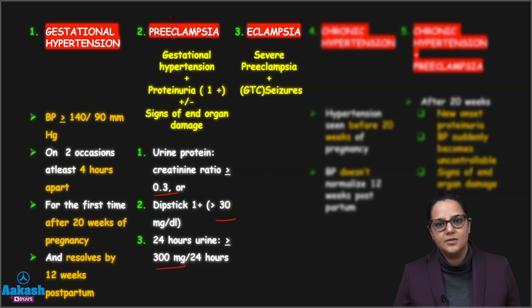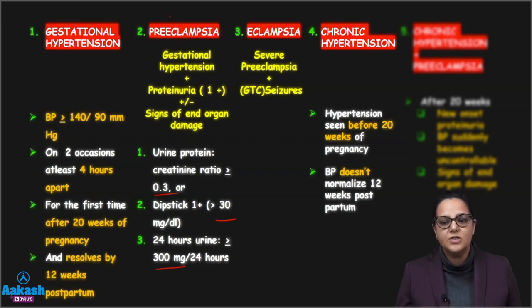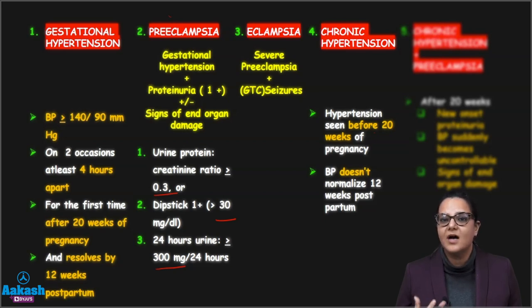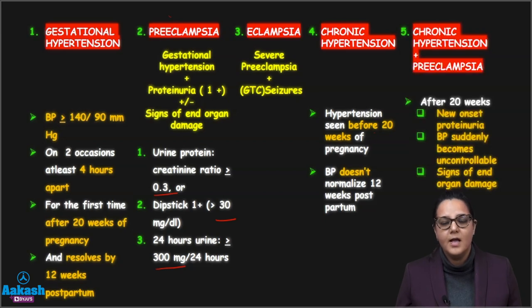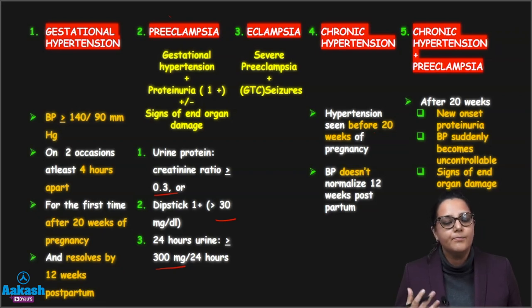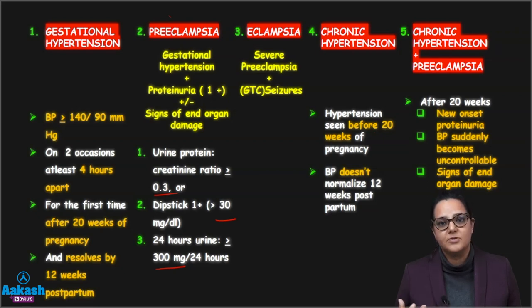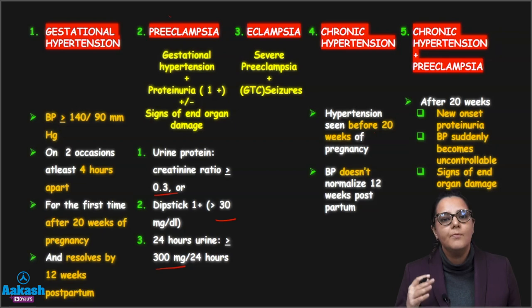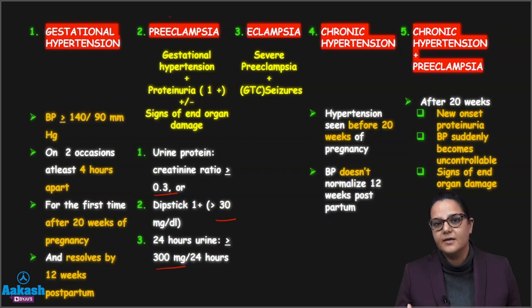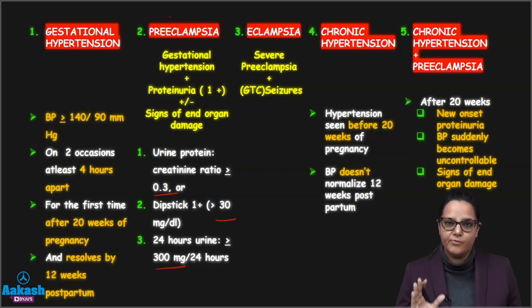Now let's discuss two other terminologies. Chronic hypertension is hypertension which is seen before 20 weeks of pregnancy, and it might not get resolved even 12 weeks after giving birth. The last condition is chronic hypertension with superimposed preeclampsia: the blood pressure has arisen before 20 weeks, but now the patient has symptoms of preeclampsia — presence of protein in urine after 20 weeks, high blood pressure again after 20 weeks, and signs of end organ damage coming after 20 weeks, in addition to the elevated blood pressure which was present initially before 20 weeks.